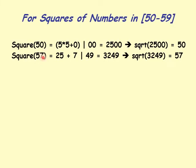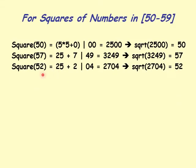Square of 57: 5 times 5 is 25, plus 7 gives 32 on the left, and 7 squared is 49 on the right, making 3249. So square root of 3249 is 57. We check: two digits on the right give 7, and 25 plus 7 equals 32 on the left.